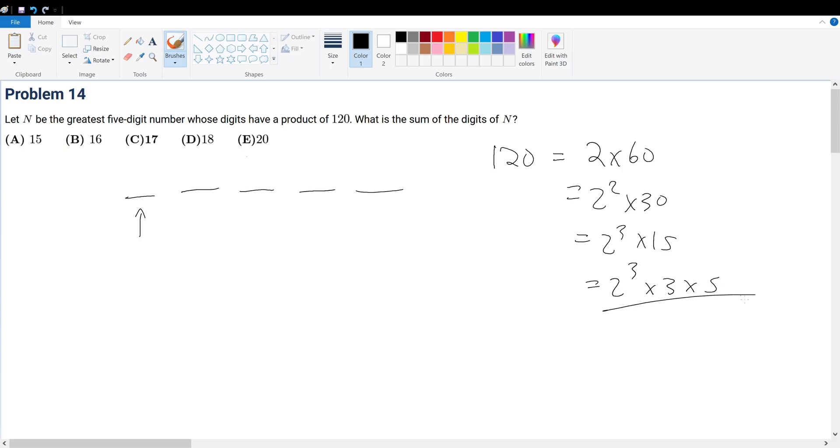Any number that's a factor of 120 must be combined from a combination of three twos, one three, and one five in any combination. So how do we derive the largest single digit from this pile here?